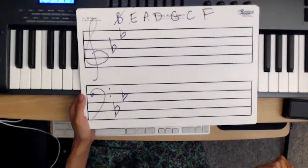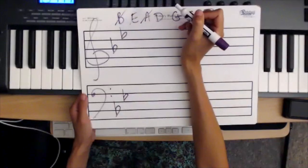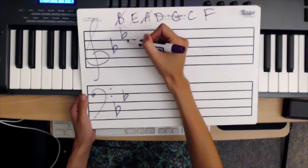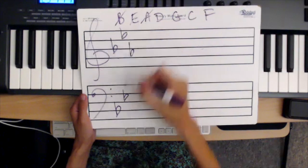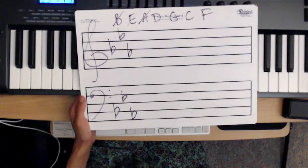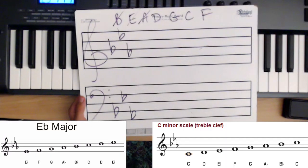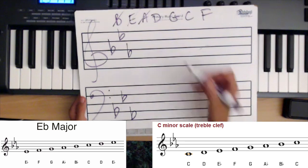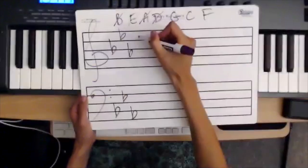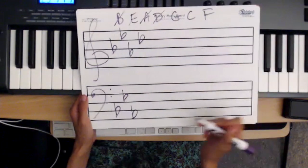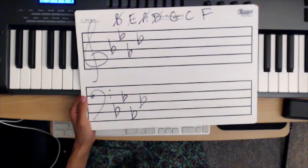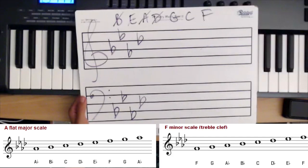The scale that has three flats — B flat, E flat, and A flat — going down five steps each time — is E flat major, or C minor as the relative minor. The scale with four flats — B flat, E flat, A flat, and D flat, going up four steps to D flat — is A flat major, and the relative minor is F minor.